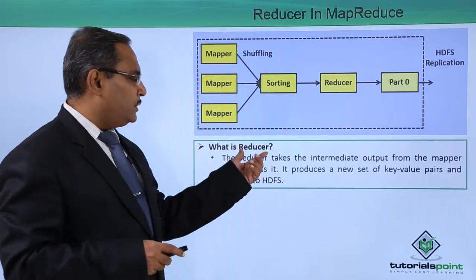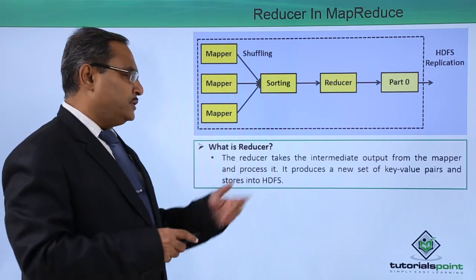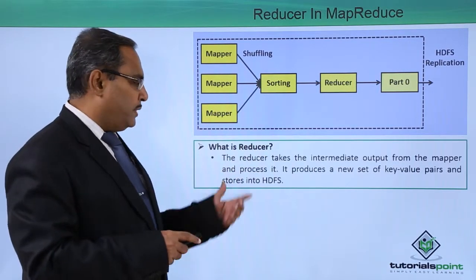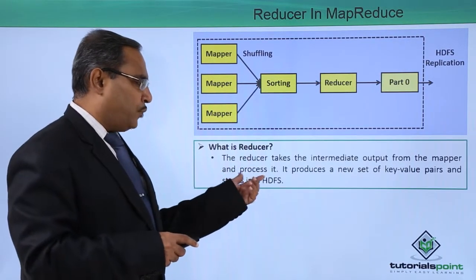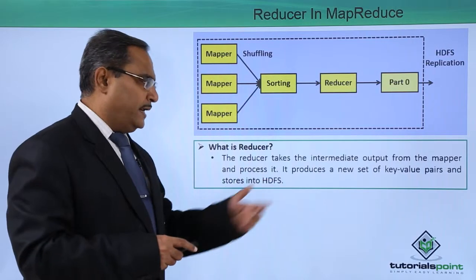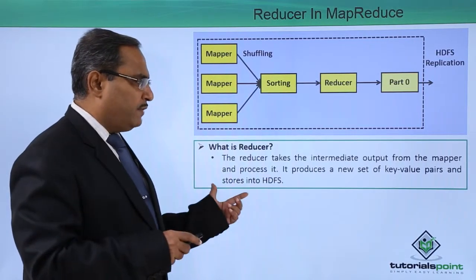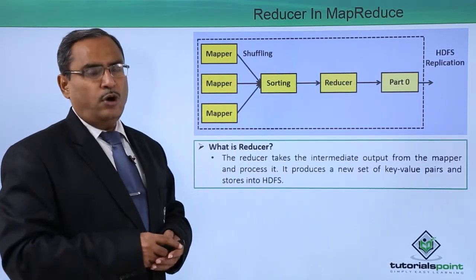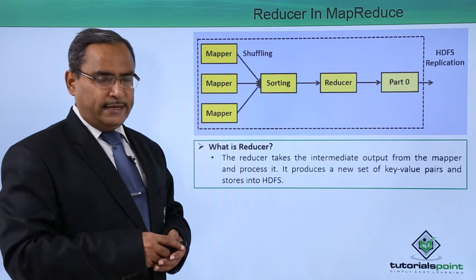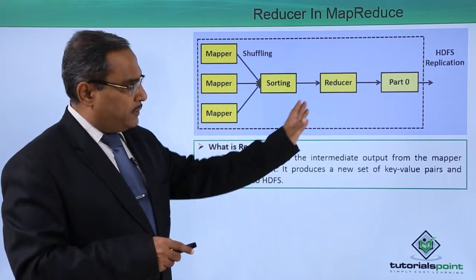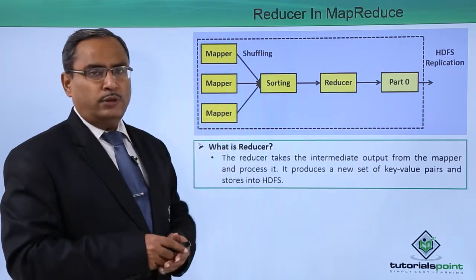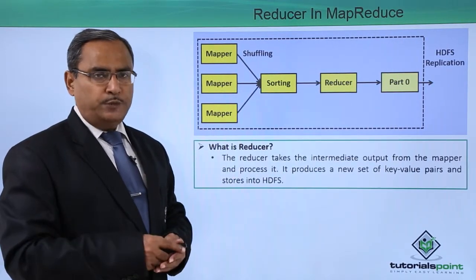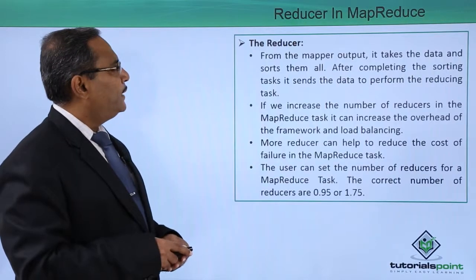So what is a reducer? The reducer takes the intermediate output from the mapper, processes it, and produces a new set of key-value pairs, and stores them onto the HDFS — that is the Hadoop Distributed File System.